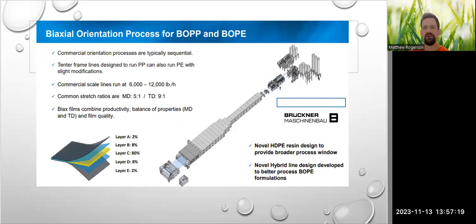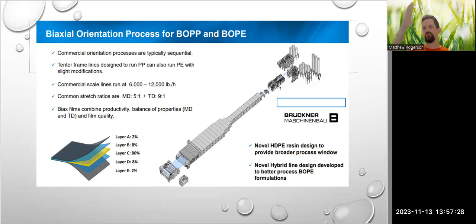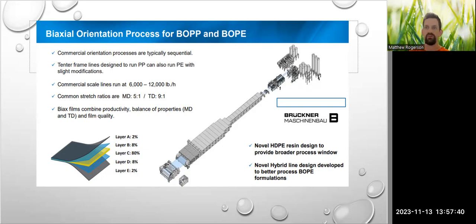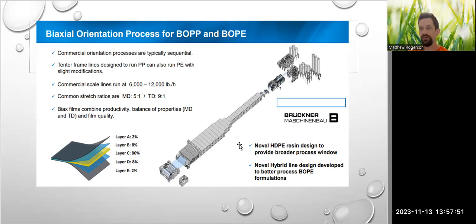For biaxially oriented film, if you look here, you're looking at the machine from above. Rather than having that tower setup where it heats, draws, and is pulled, here the film is heated up and frames pull it along both axes simultaneously. As it flows down the line, it gets pulled in both directions so that it maintains a uniform thickness throughout.